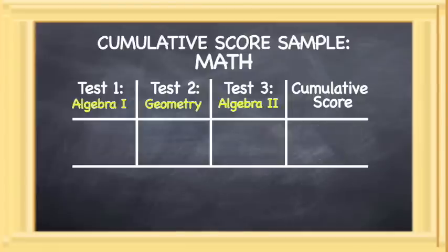In another example, using the three math EOC exams, our student receives a score of 1000 in Algebra 1 and 1000 in Geometry, which are both above the minimum passing score. However,